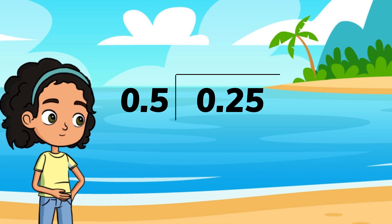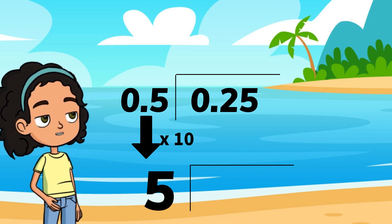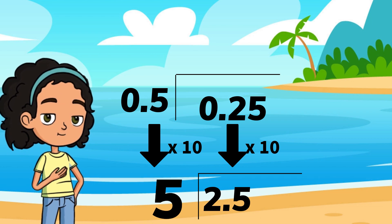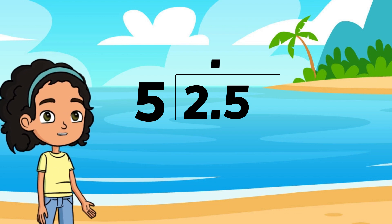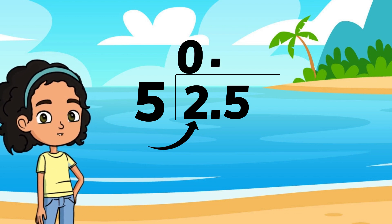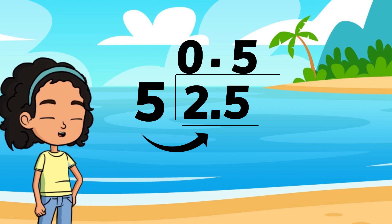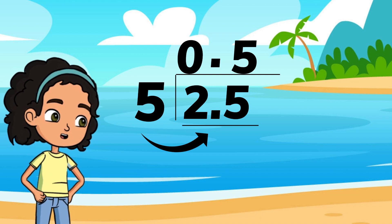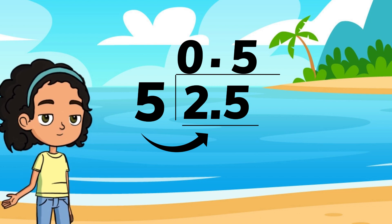Now back to our first problem. Five tenths is now five, and twenty-five hundredths is now two and five tenths. Go ahead and bring your decimal up. Five into two is zero, and five into twenty-five is five. Your quotient is five tenths. Don't forget to check your answer using multiplication. Here are two problems to practice on your own.